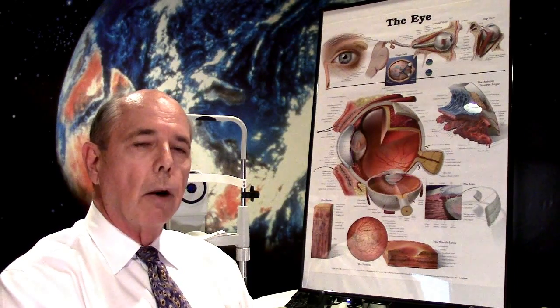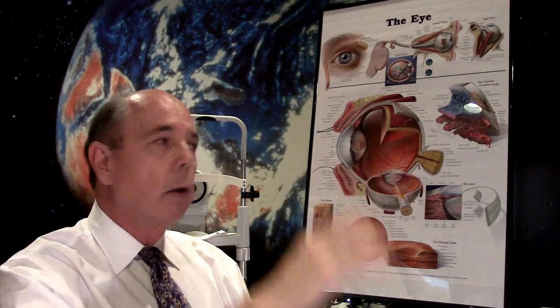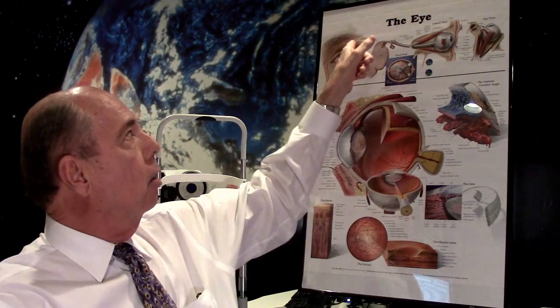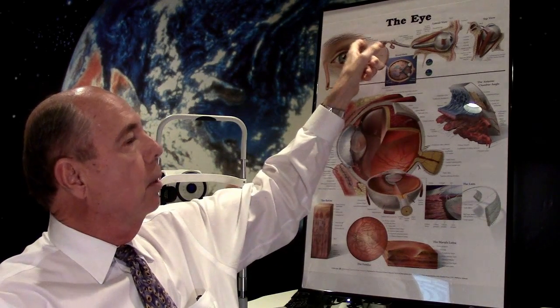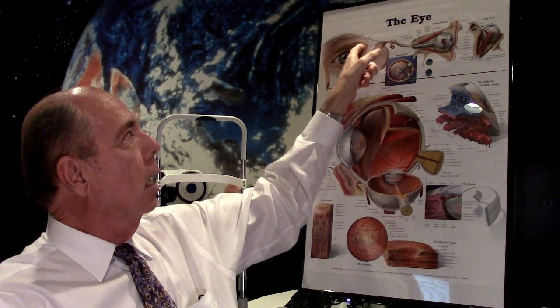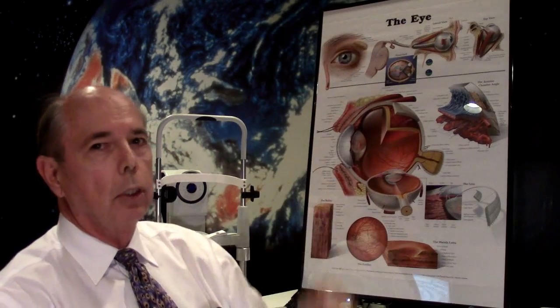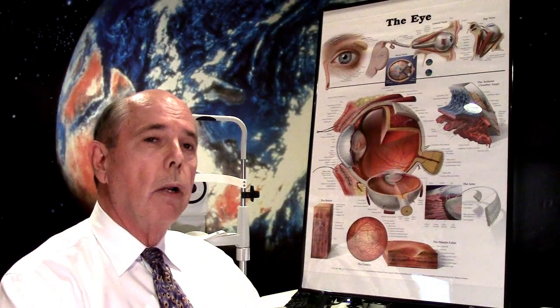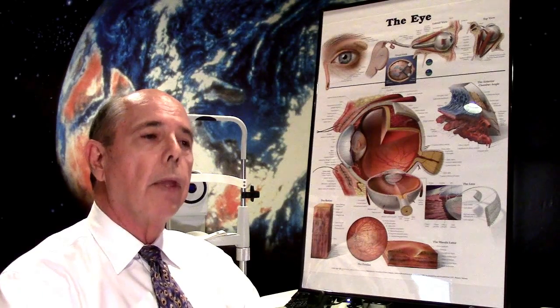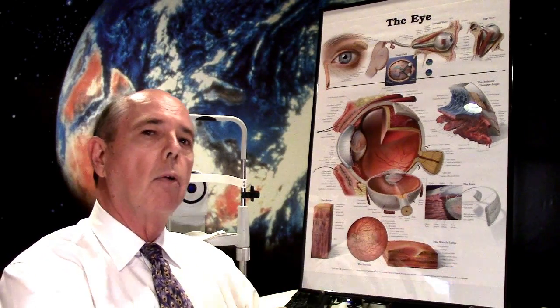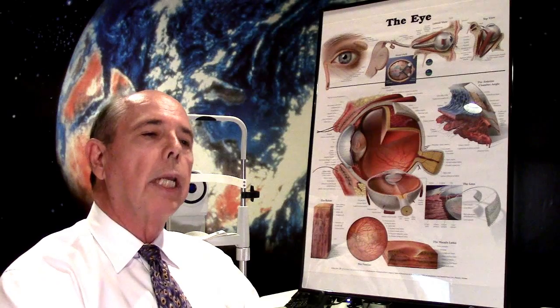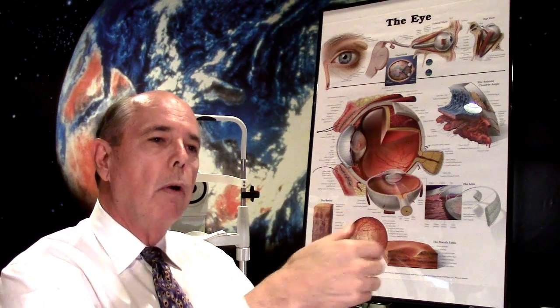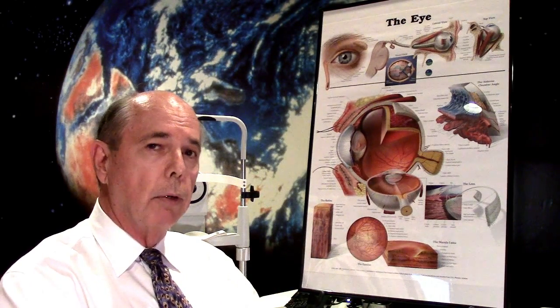And then the next layer is a liquid or water layer that's produced by the lacrimal gland that's up here on the outer, underneath the lid, up here in the outer corner of the orbit. This lacrimal gland secretes tears into your eyes. When you really get emotionally upset or you get something in your eye, then that lacrimal gland pours a lot of water. But it normally produces tears in a steady flow for the liquid layer of your tear film.